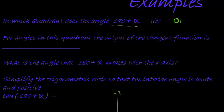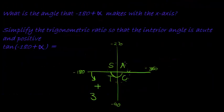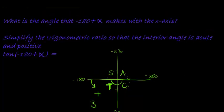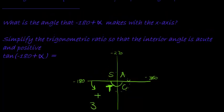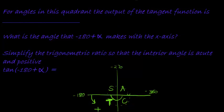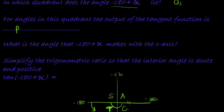Which quadrant? Q3. For angles in this quadrant, the output of the tangent function is... okay, tan is positive in this quadrant. It doesn't matter if the angle is negative. It falls in the third quadrant, where tan is positive.